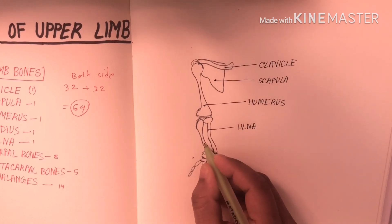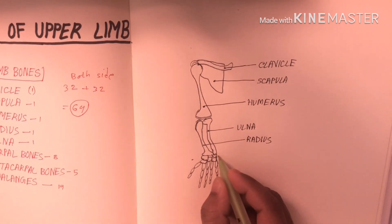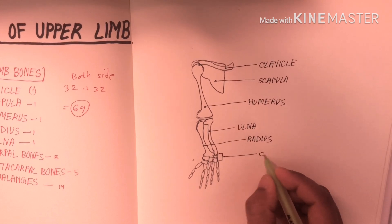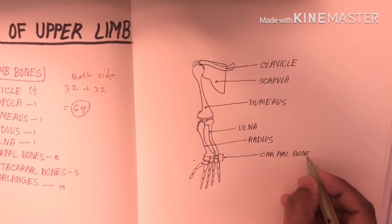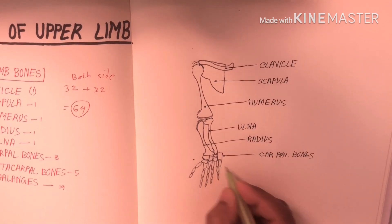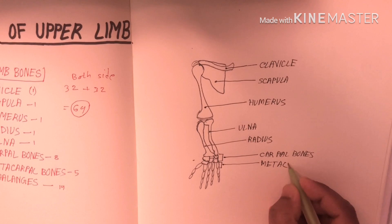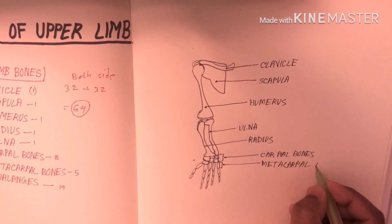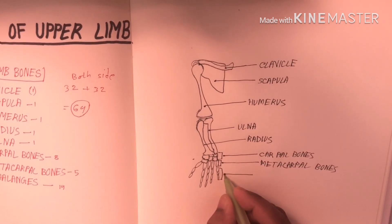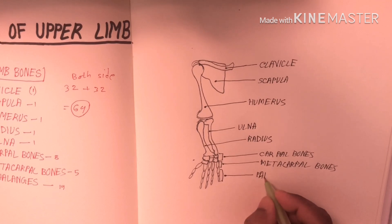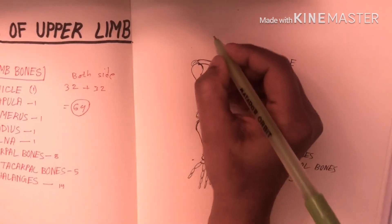Then radius, carpal bones, phalanges, sorry — metacarpal bones. This is the right side under rear view.